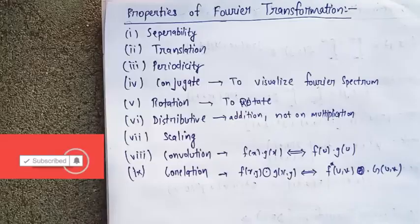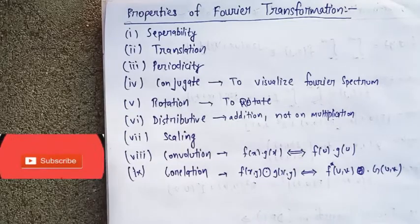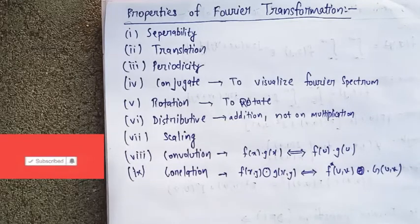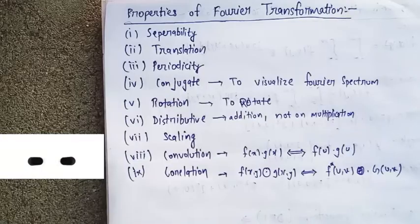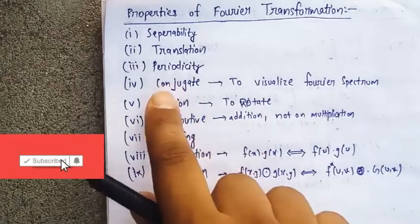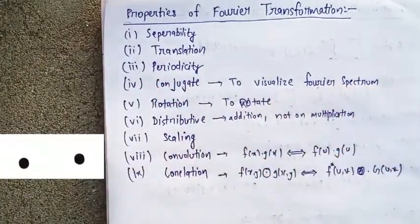If I talk about translation, it is easy as we know. Periodicity - we can do in both ways, either in the original signal or in the inverse. In the case of conjugate, this is the thing you need to know to visualize the Fourier spectrum. If you want to know how we can get the Fourier spectrum, we have to do the conjugate.